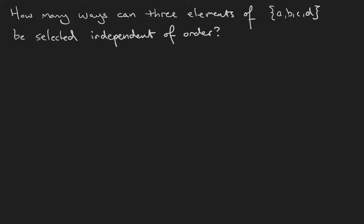In this video, we're going to count unordered samples where we're not able to repeat or replace the elements. For example, how many ways can three elements from the set A, B, C, D be selected independent of their order?